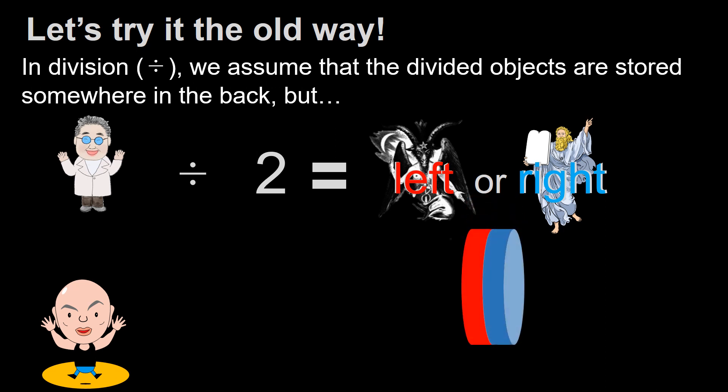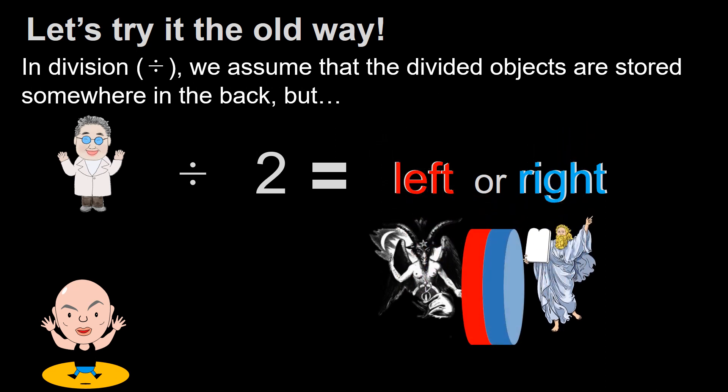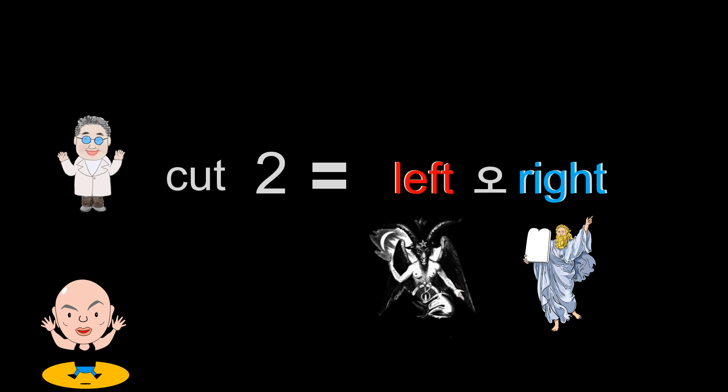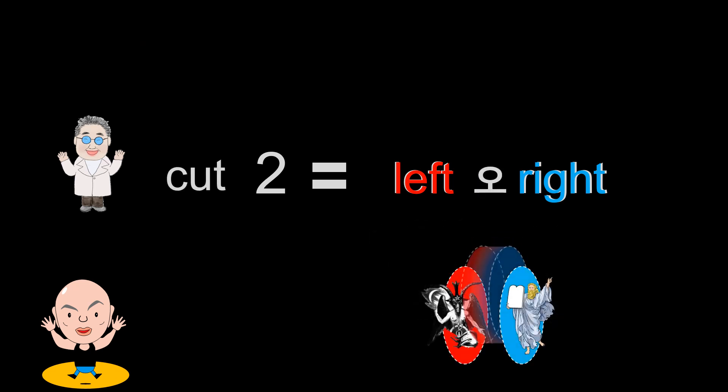Let's try it the old way. In division, we assume that the divided objects are stored somewhere in the back. But human divided by 2 is left or right? Human cut 2 is left cut operator right.